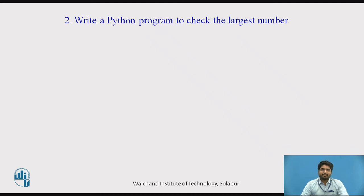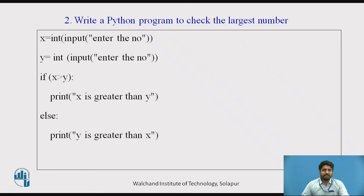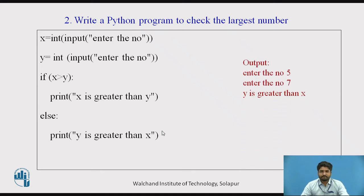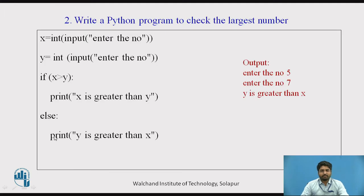Next program: check the largest number among two values. I have taken two variables x and y. If x is greater than y, print 'x is greater than y', else it goes inside the else block and prints 'y is greater than x'. Here, x is 5 and y is 7. Since 5 is not greater than 7, that is false, it executes the else block — 'y is greater than x'.